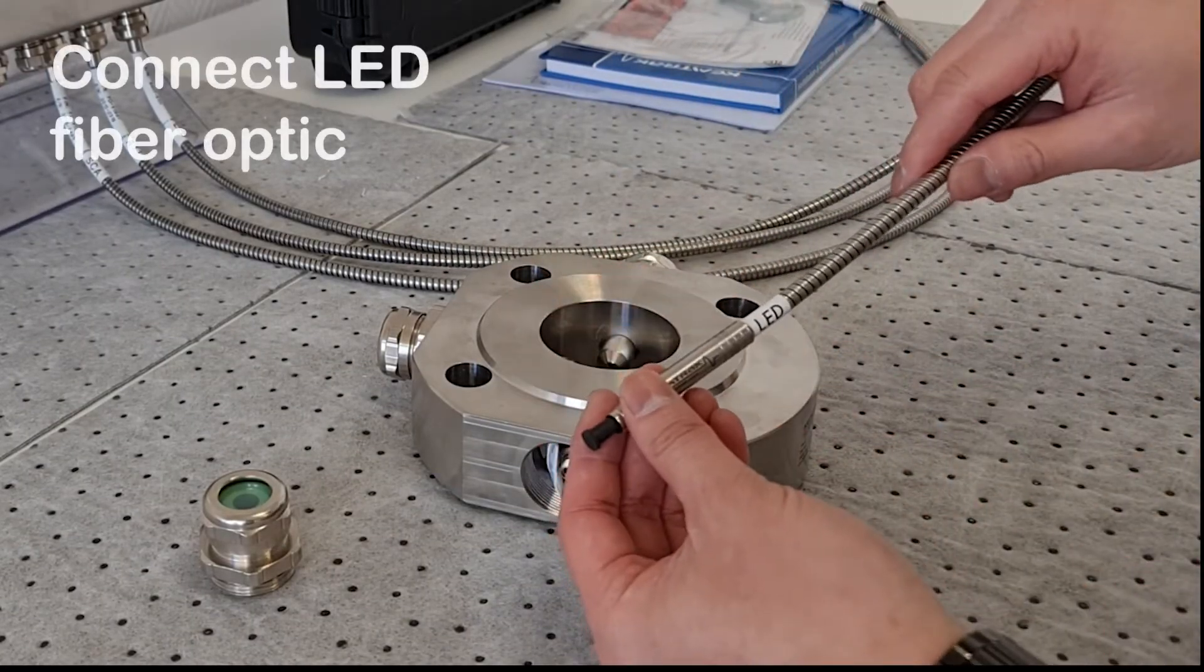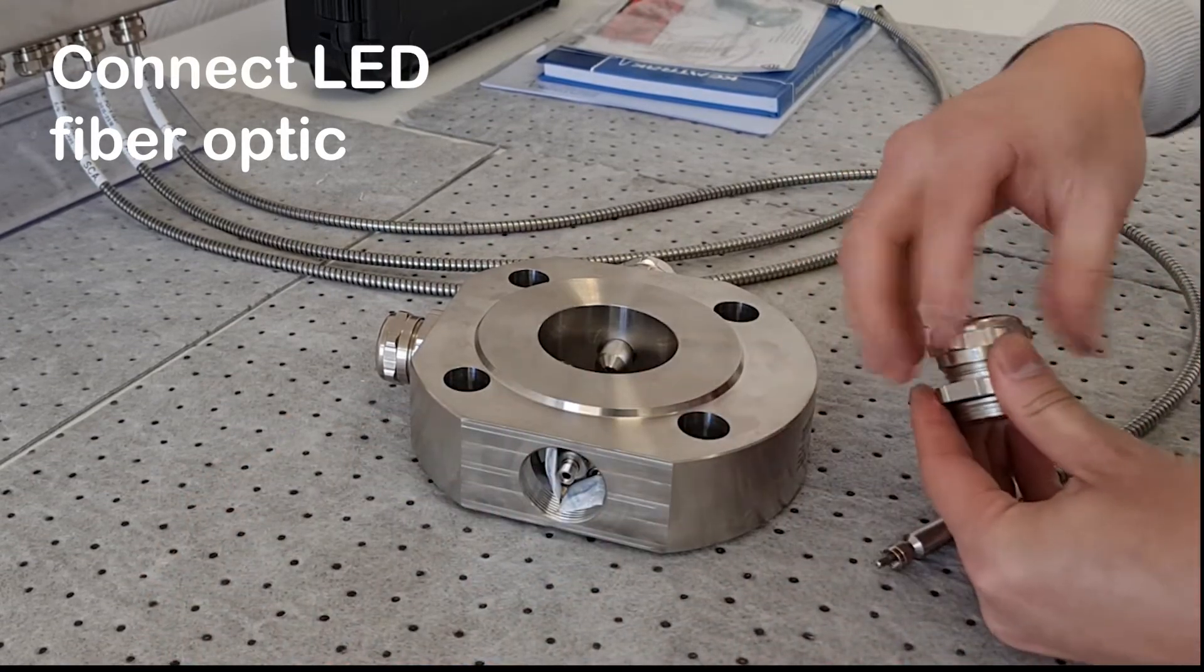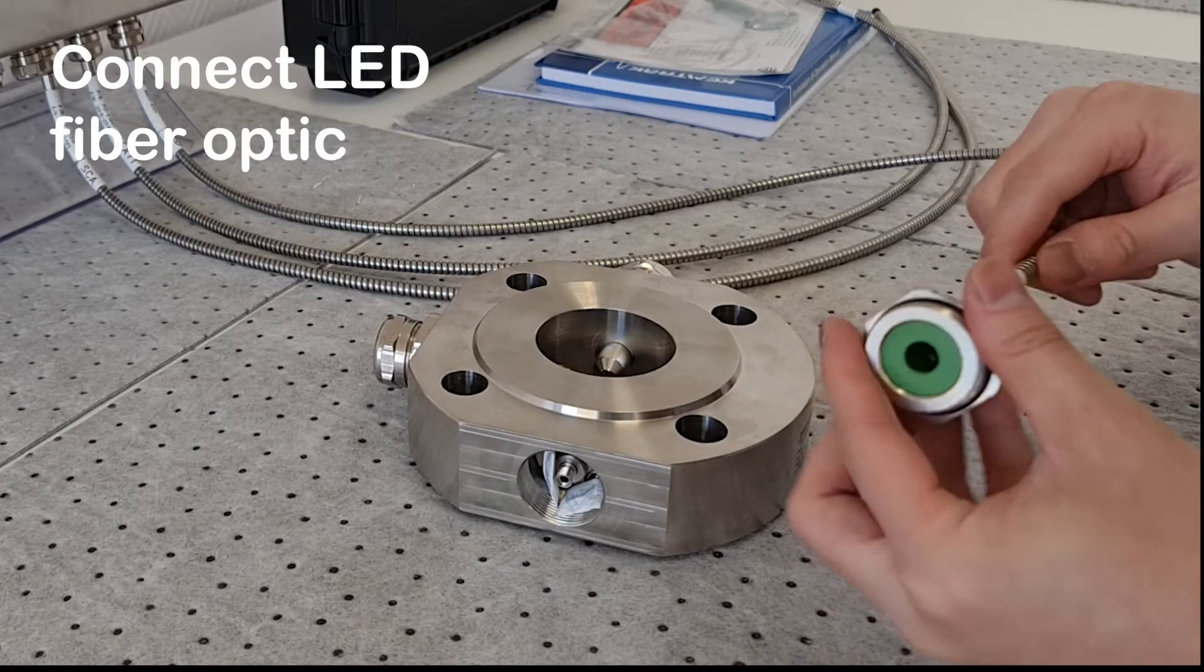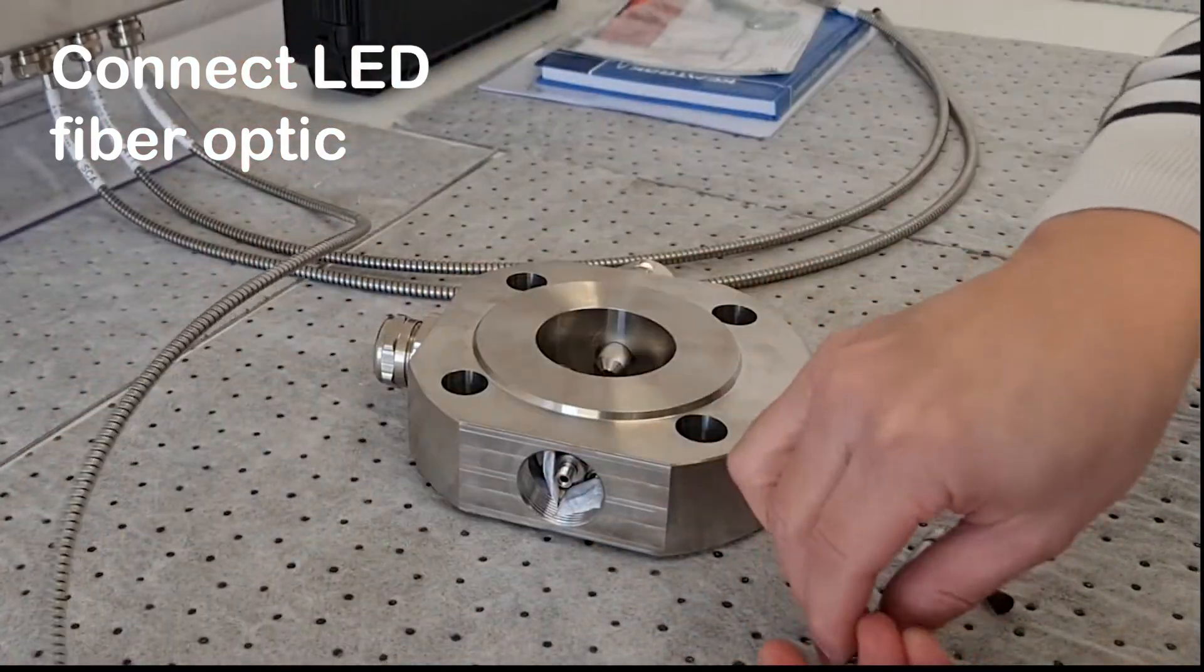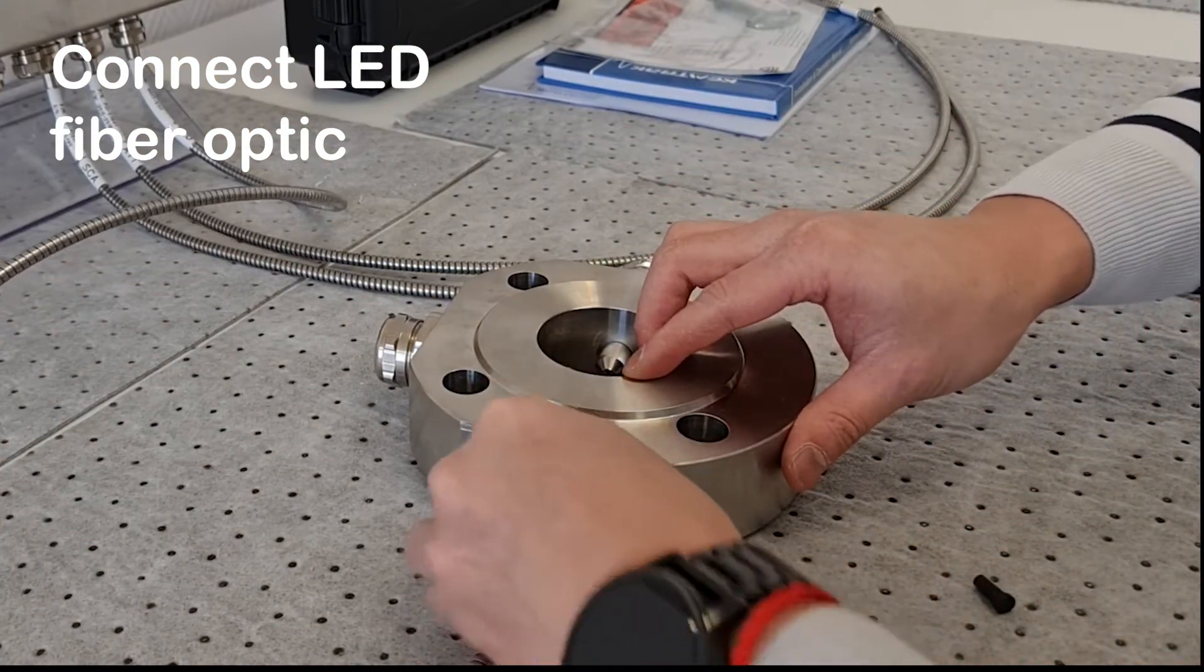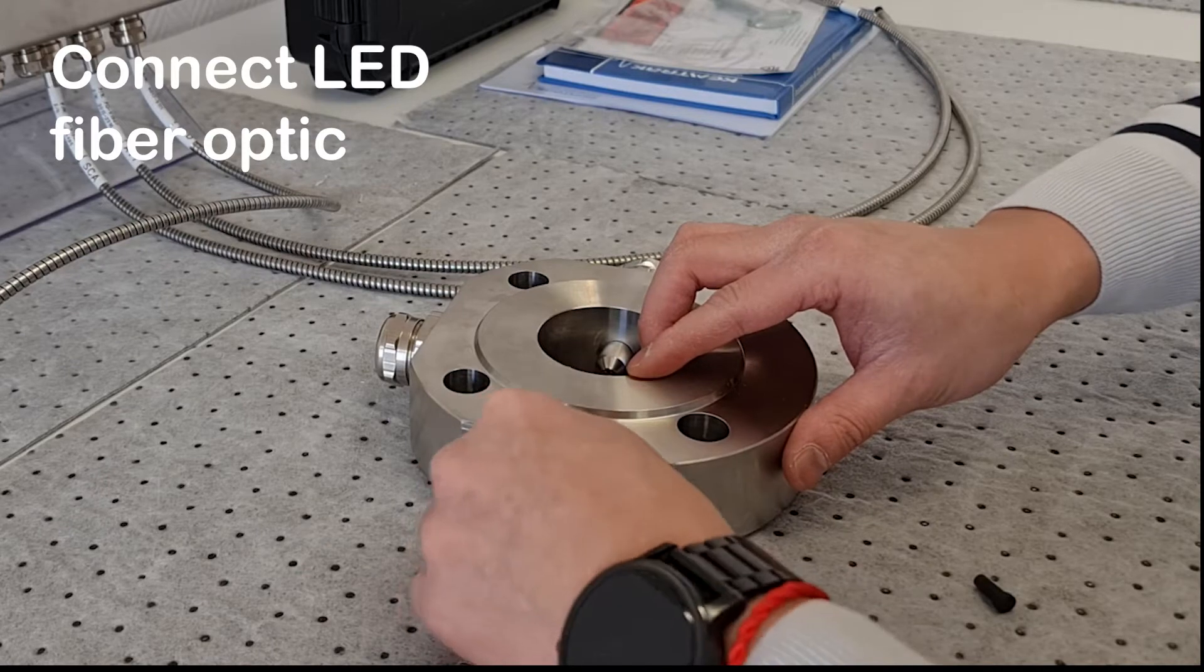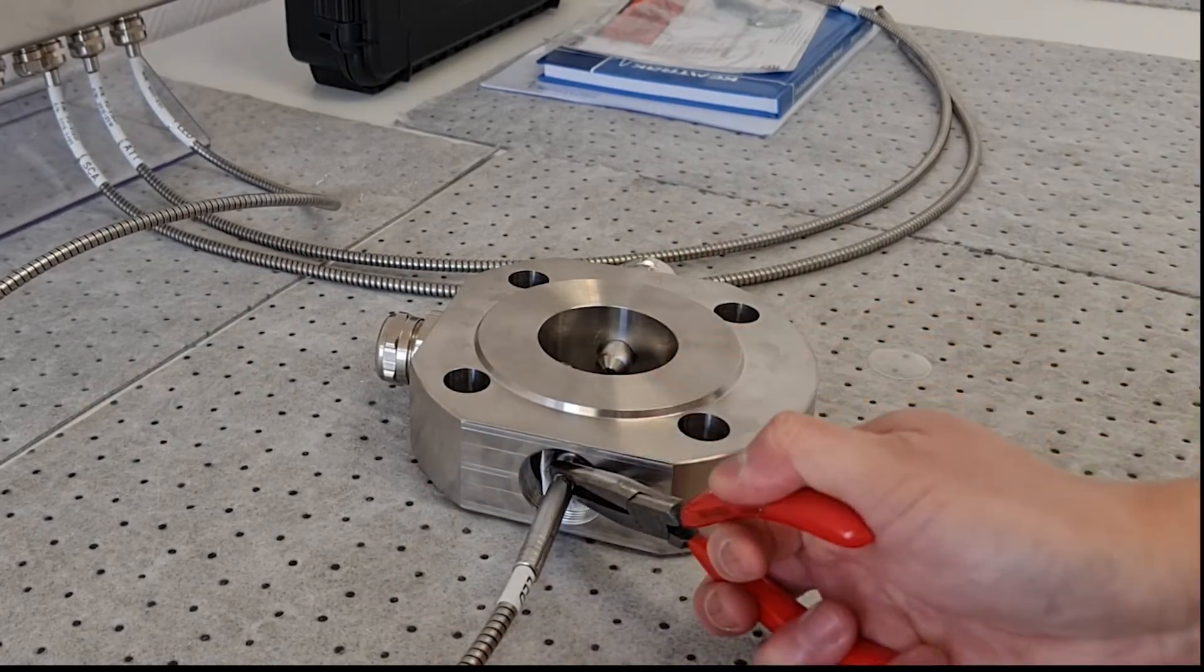Connect the fiber marked LEAD to one of the two ports facing one another. Hand tighten the fiber optic connector to the measurement cell, then use a pair of long nose pliers to assure the fitting is firmly attached.